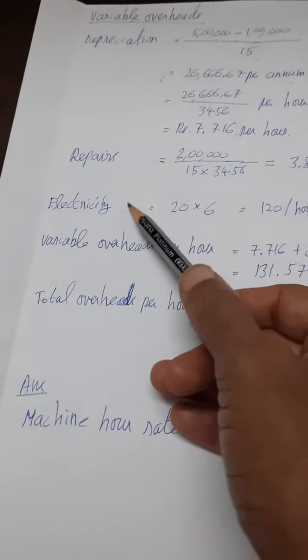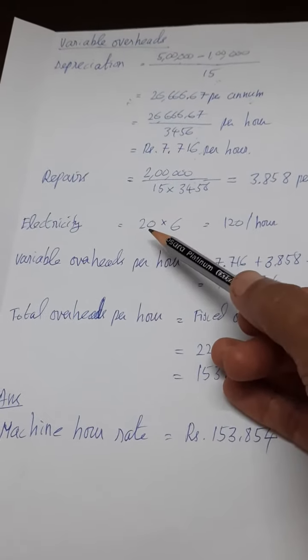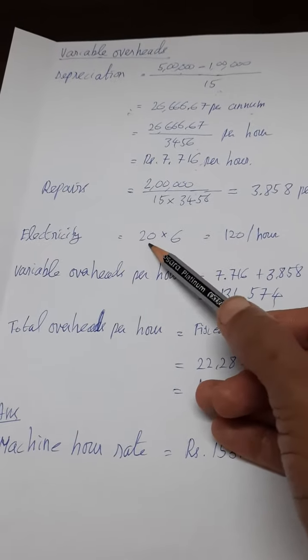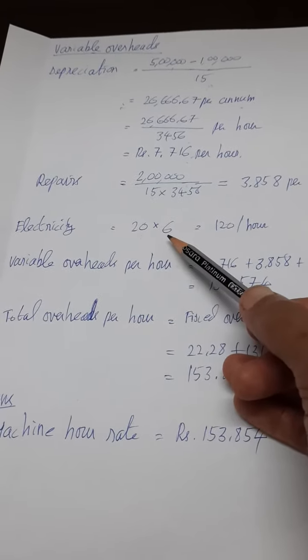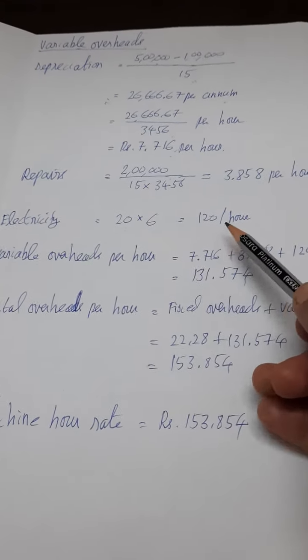Electricity - when you run the machine tool it will consume electricity. This particular machine tool is consuming 20 units per hour. 20 units into the rate of electricity is 6 rupees per unit, so you are getting 120 rupees per hour.